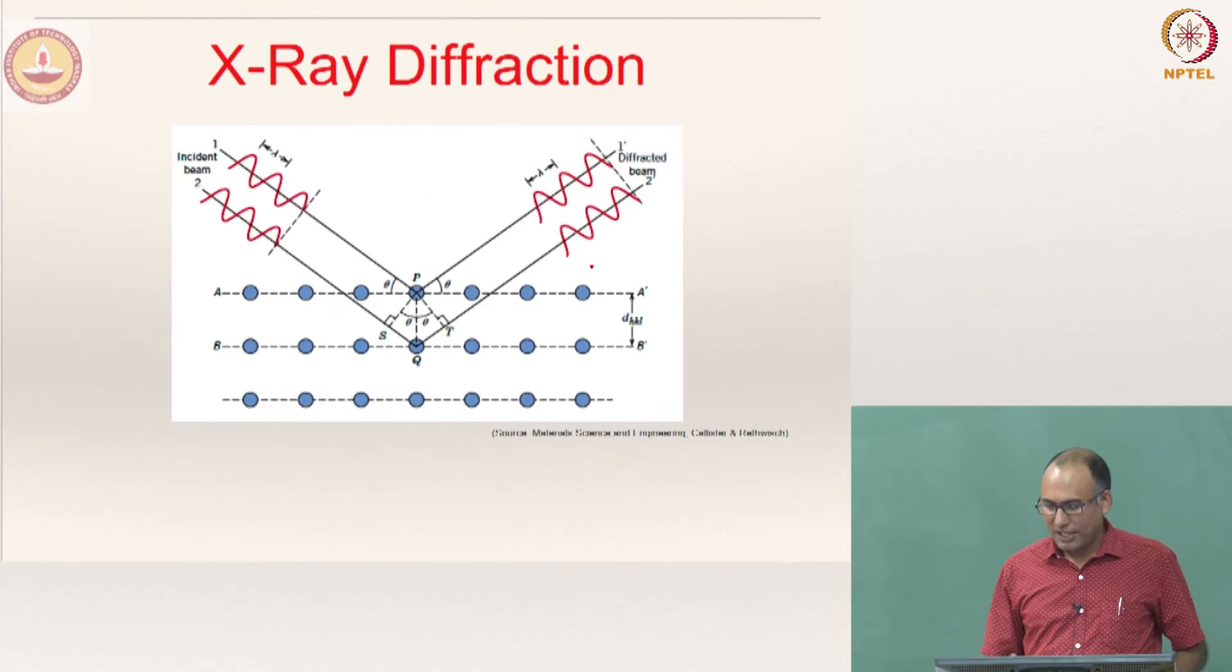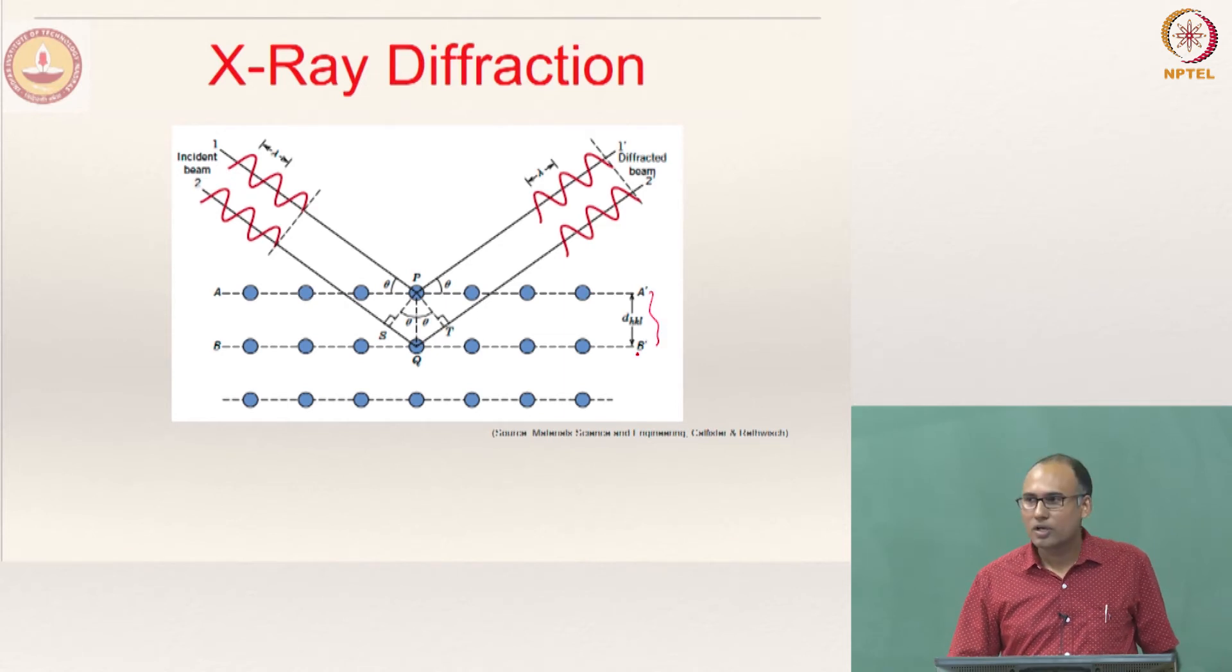Let us say this is your atomic planes. The two planes of atoms are separated by a distance dhkl, where hkl is the indices of your plane. So there are two parallel planes. Let us say you are shining light and the X-ray is coming, incident wave 1 and incident wave 2. And now depending upon this distance, the diffraction happens. This is the diffracted beam 1 and diffracted beam 2.